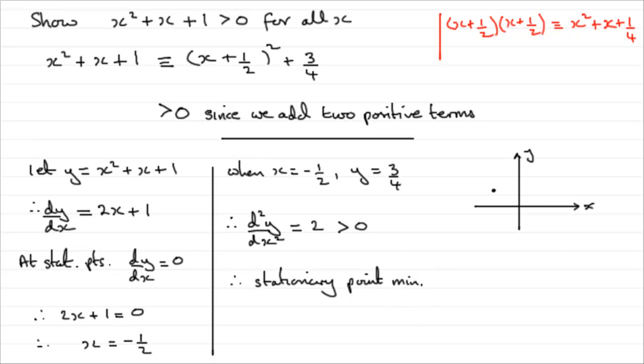So we now know that our graph would look something like this, rather than just saying, oh, because it's an x squared curve, it must be this shape.